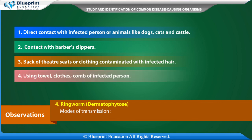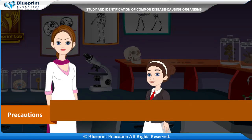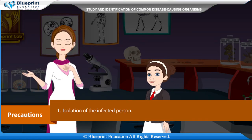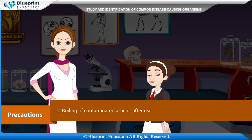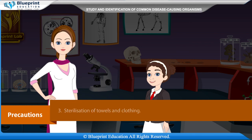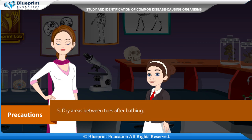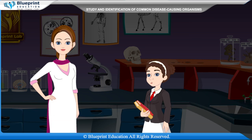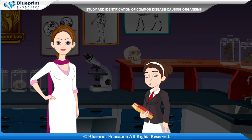Transmission also occurs by using the towel, clothes, or comb of an infected person. Precautions: isolation of the infected person, boiling of contaminated articles after use, sterilization of towels and clothing, maintaining strict personal hygiene, and drying areas between toes after bathing.